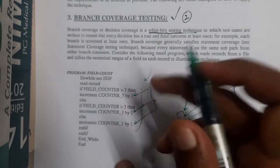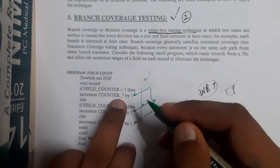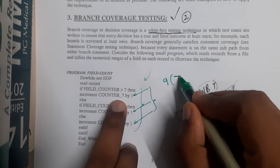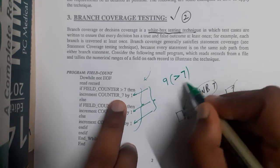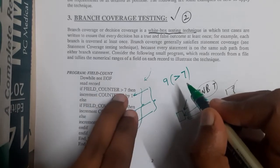Assume if field count is greater than 7, then increment it. Now, first time I will be giving greater than 7, something greater than 7. So that is 9 I give. Similarly, the second time I will not give greater than 7, means it is less than 7.